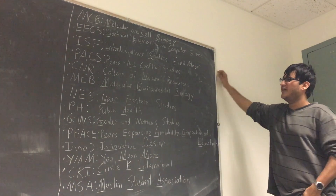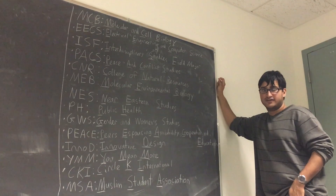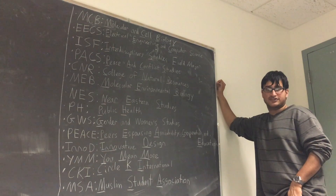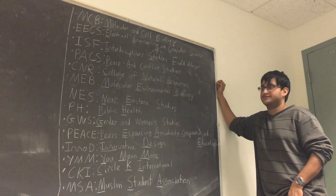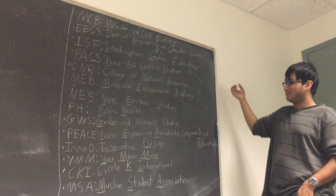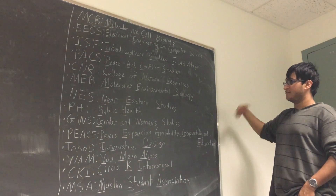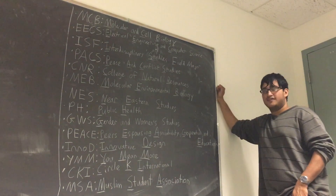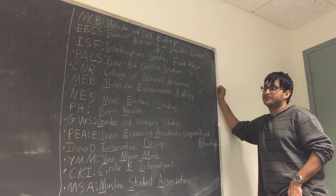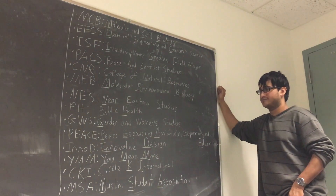CNR is the College of Natural Resources. It's not exactly a major, but rather a college under which several different majors and departments fall. As an example, MEB — Molecular Environmental Biology — is a major underneath the CNR College of Natural Resources.